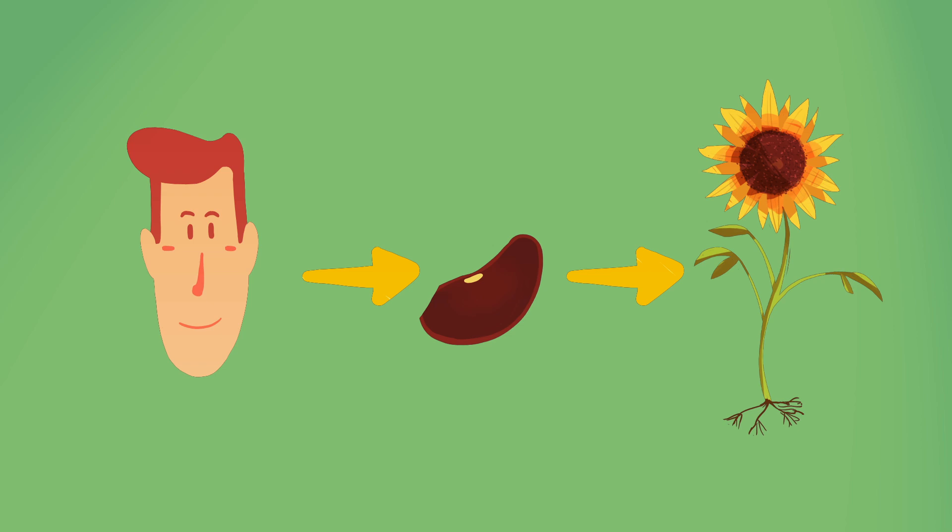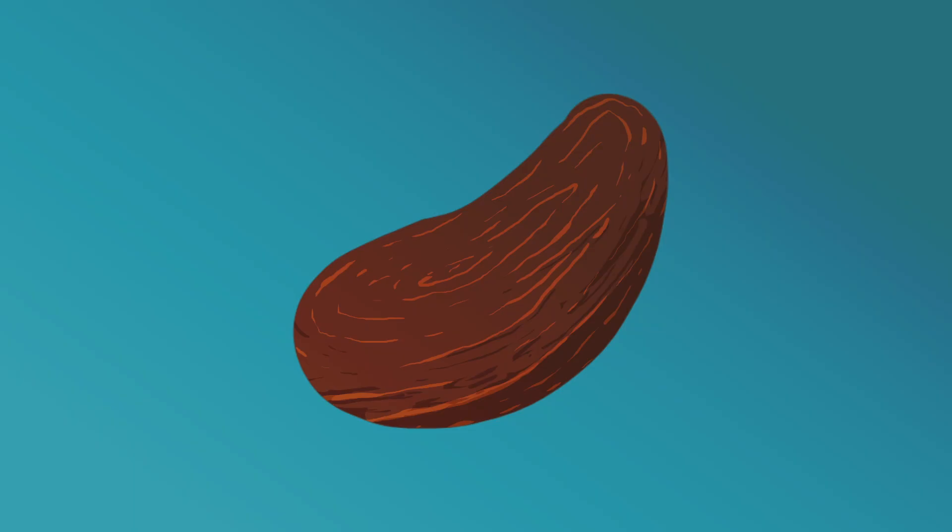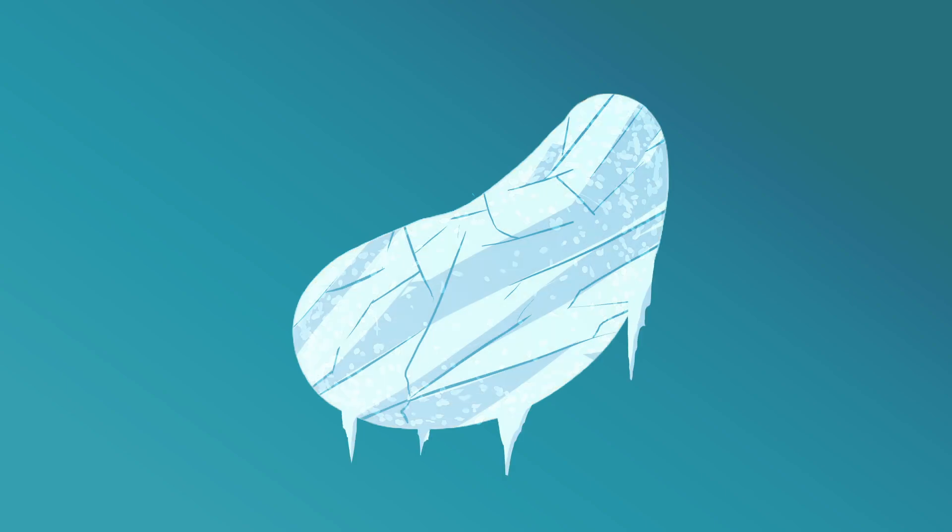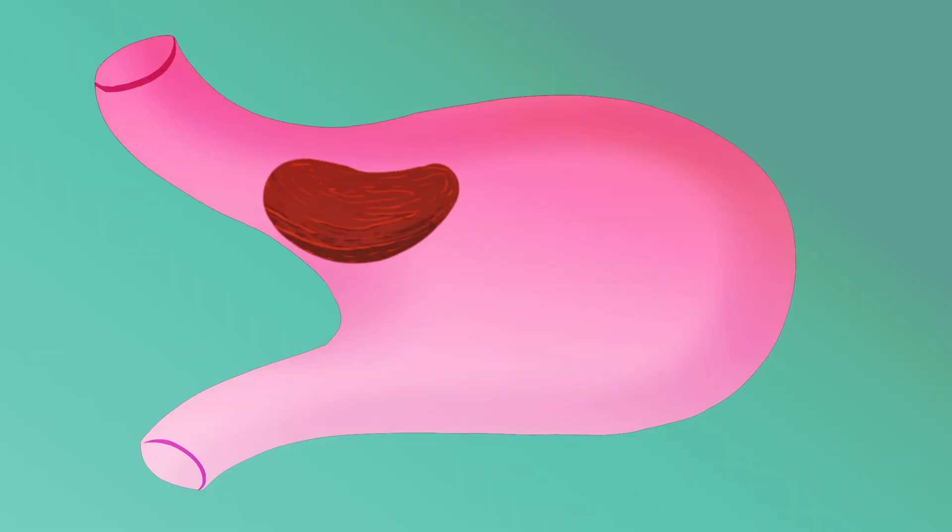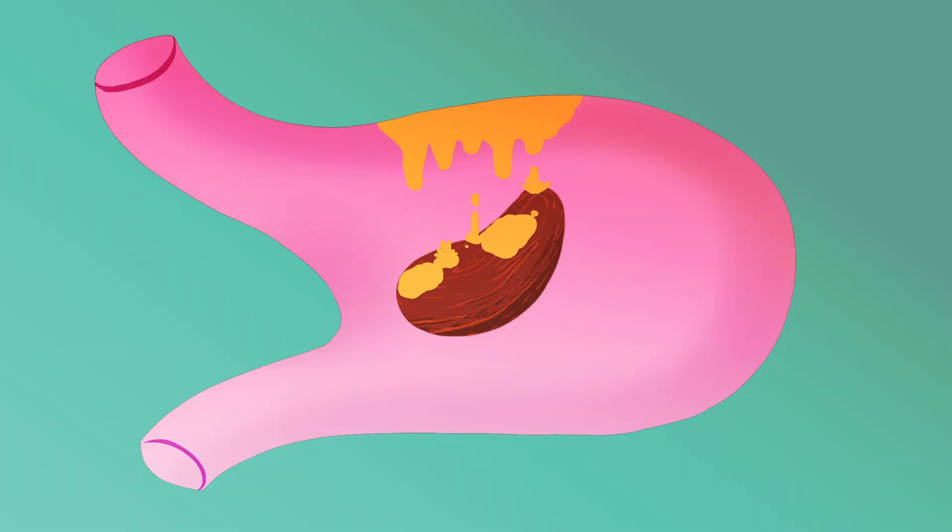Now, you might be wondering why it is that plants would need humans to do all these weird things to their seeds in order to grow. And in fact, they don't. In natural environments, seed coats are worn down by cold temperatures, bacteria, or even animal digestion. Our scarification methods just mimic and accelerate these natural processes to increase the chances of successful germination.